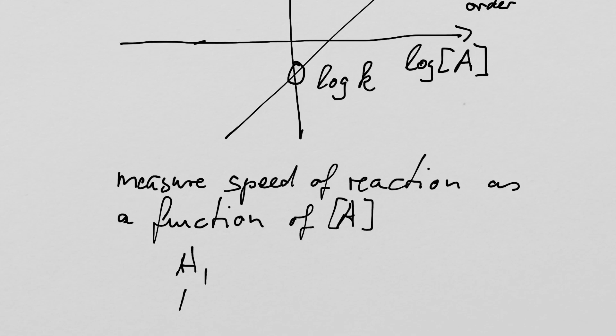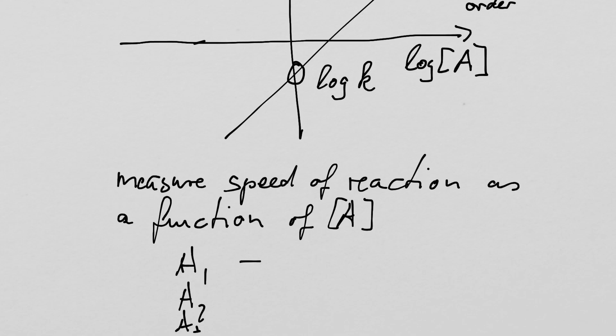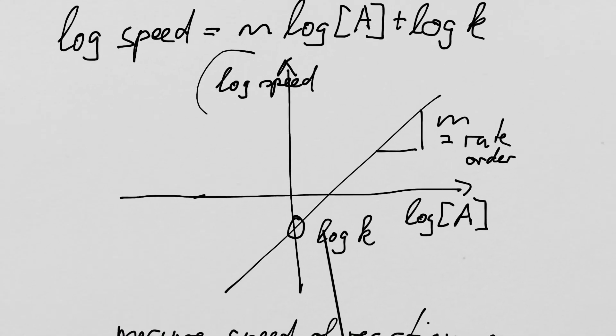So we have A1, A2, A3 and we will get speed 1, speed 2, and so on. And this is then what we plot on our graph: log speed versus log[A]. I hope this makes sense and thank you for watching.